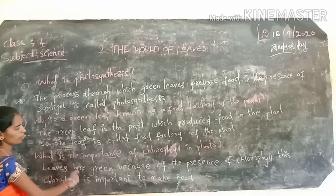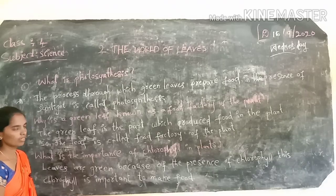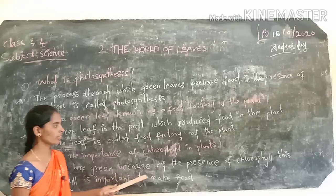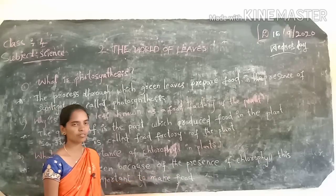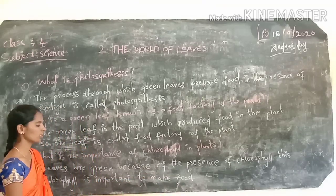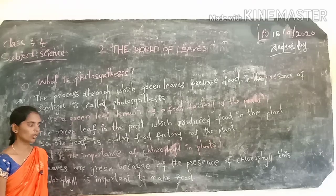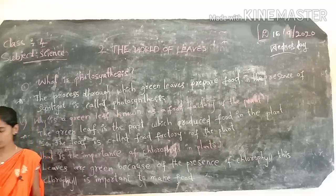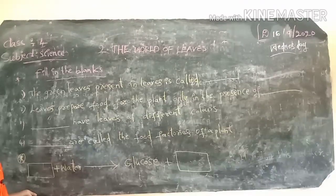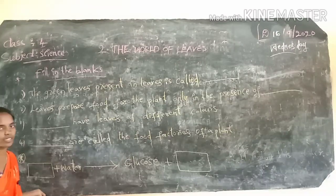What is the importance of chlorophyll in plants? Leaves are green because of the presence of chlorophyll, and this chlorophyll is important to make food. Next, bits.